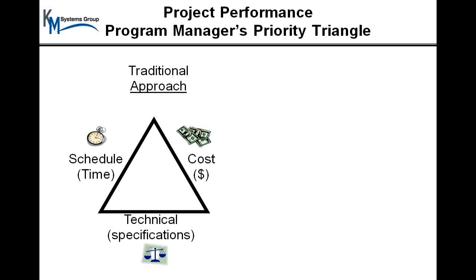We call it the priority triangle because we would like our customer to tell us what's most important. I once had an experience as a program manager where a very demanding customer asked me to simultaneously optimize all three performance goals — schedule, cost, and technical. At that point, I could either disappoint them now or disappoint them later. I figured the best thing to do was disappoint them now, so I penned my letter of resignation and forced the customer to select, in some priority, which of these goals were most important. Because going forward, we know we'll face situations where we have to make decisions that trade off one for another.